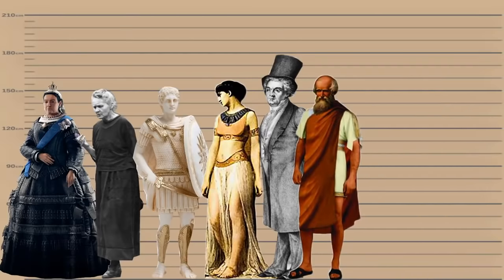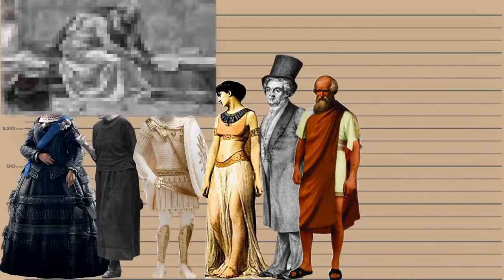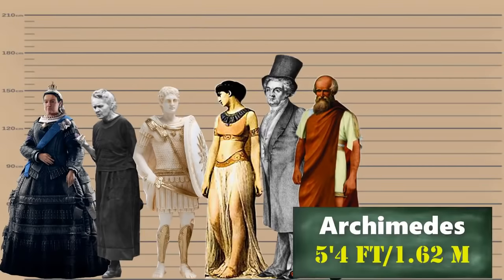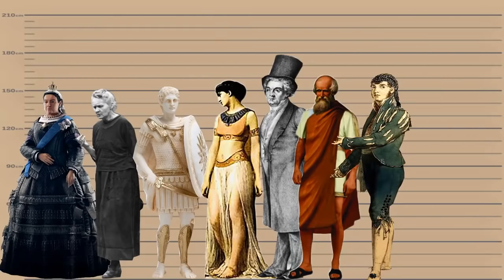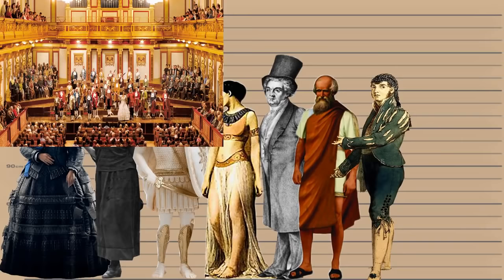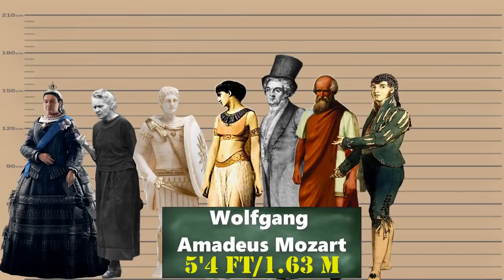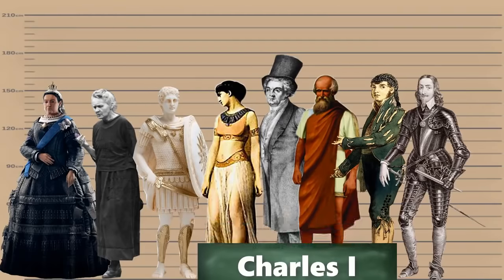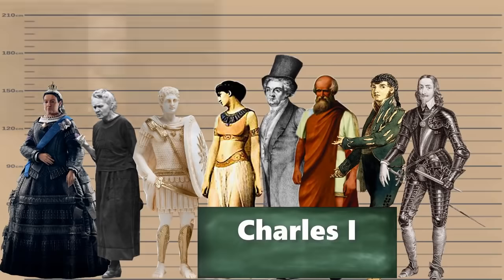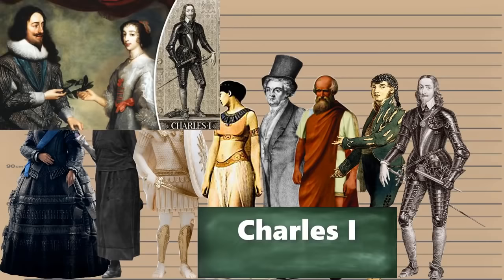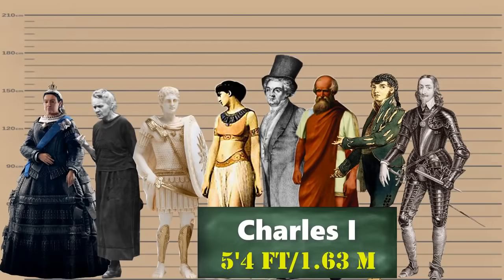Next we have the versatile Greek mathematician, physicist, engineer, inventor and astronomer Archimedes, whose height was 5 feet 4 inches. Next up we have the Austrian-born prolific and influential composer of the classical era, Wolfgang Amadeus Mozart, who scaled up to 5 feet 4 inches. Then we have King Charles I, a monarch over three kingdoms of England, Scotland and Ireland, who stood at the height of 5 feet 4 inches.